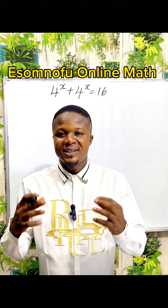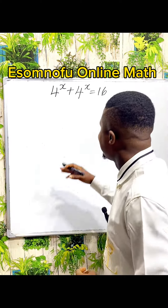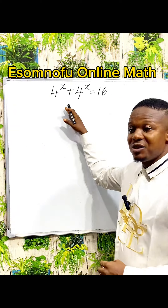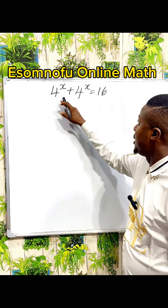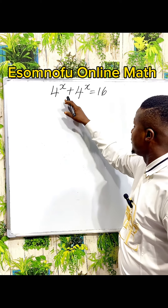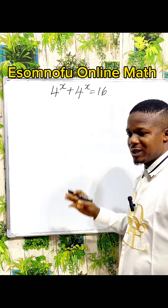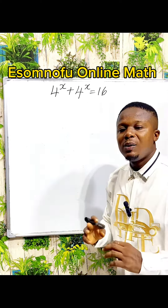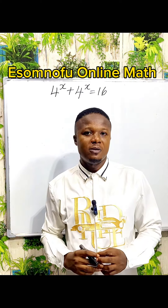Hello everyone, this is Esom North Online Mass. In this lesson, we have this problem to solve: 4 to the power of x plus 4 to the power of x is equal to 16. Our target is to find the value of x.